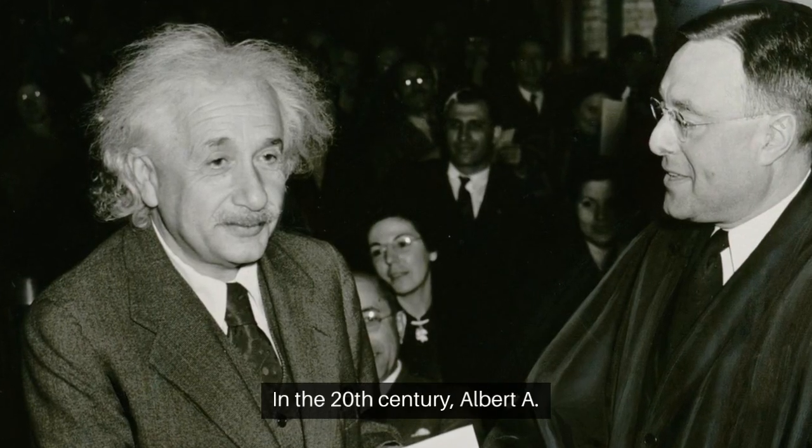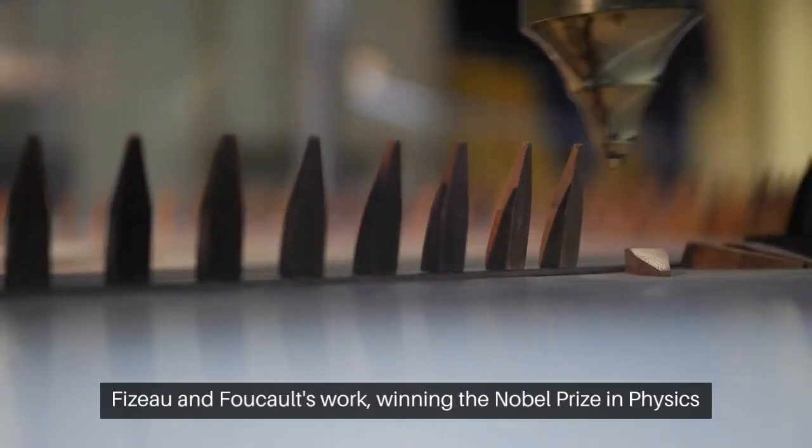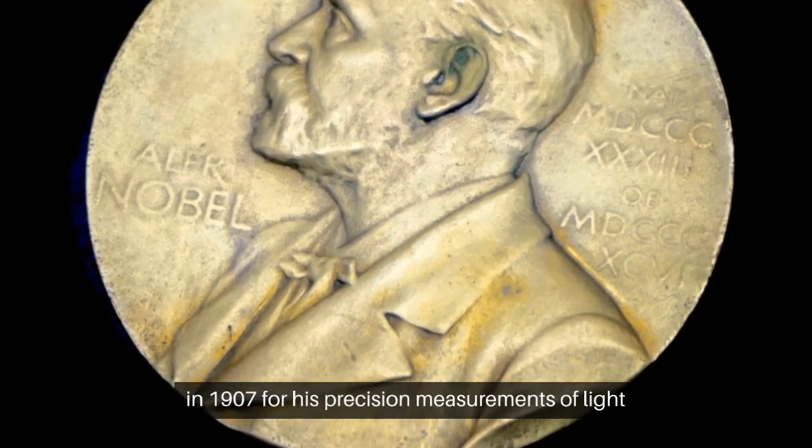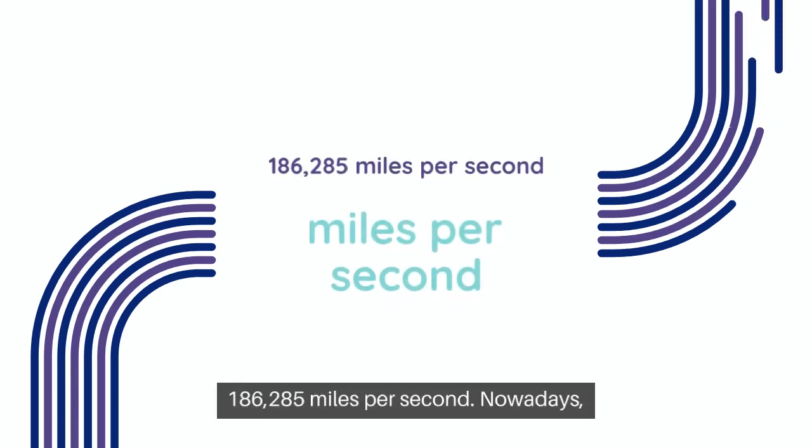In the 20th century, Albert A. Michelson, an American scientist, improved on Fizeau and Foucault's work, winning the Nobel Prize in Physics in 1907 for his precision measurements of light speed, refining the estimation to 186,285 miles per second.